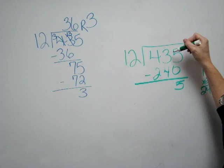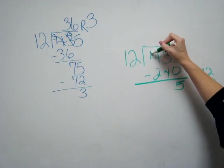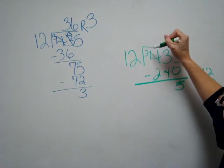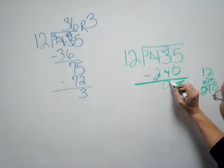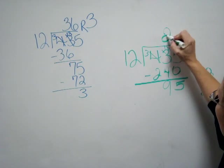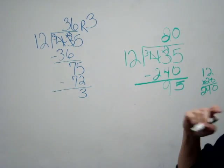Now we have to regroup because we can't take 3 from 4. So I'm going to take away 1 tens from 4, add it to the 3, and that's going to give me 95. I'm going to put 20 up here because that's what I multiplied by.